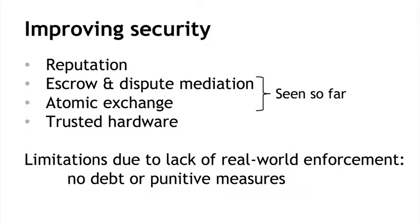The most obvious one is reputation — where you don't have a particular technological security mechanism, but instead the intermediaries or parties you interact with build up reputations over the long term. Reputation is okay in the absence of alternatives like atomic exchange, but it has problems. First, the entity has to build up reputation over the long run. If the entity you're interacting with is completely pseudonymous or anonymous, reputation doesn't even apply. We see this problem in real-world reputation systems — restaurants with bad Yelp reviews might close and reopen simply rebranded.